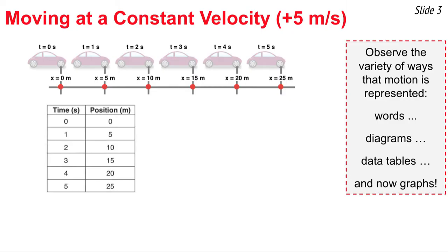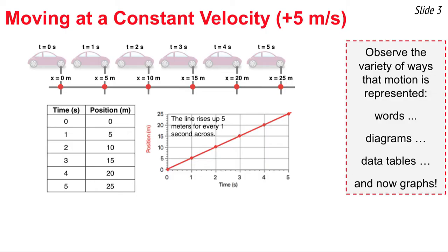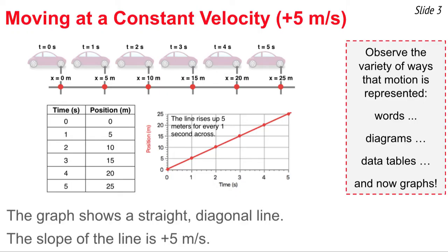If we take those times and positions and put them in a data table, we get data typical of constant speed motion — the change in position is the same for every 1 second of time. If we plot those position and time values on a graph, we get a straight diagonal line that rises 5 meters for every 1 second across. So for this constant velocity of 5 meters per second, the slope of the line is 5 meters per second.